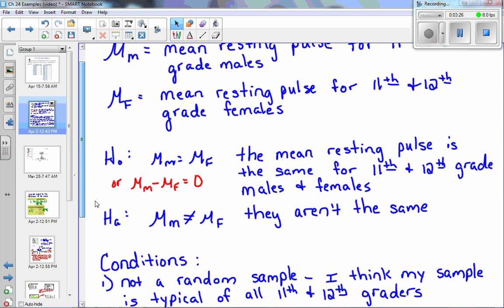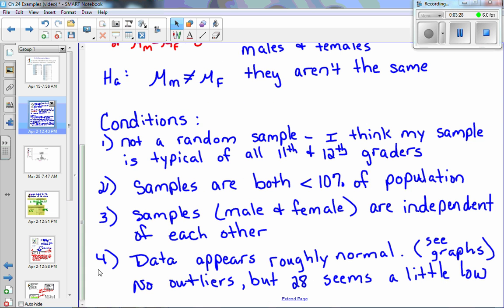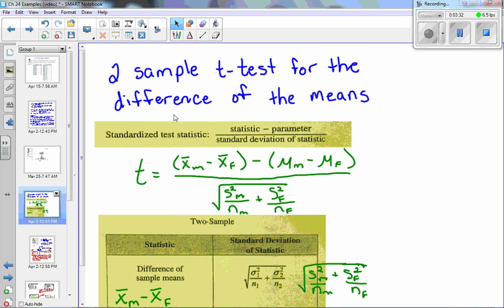So because the conditions are met, we can go ahead and do a test. The test we're going to do is a two-sample t-test for the difference of the means. Now remember, the reason why we have to use a t-test is because we don't know the population standard deviation. So because we are using the sample standard deviation, then we have to use a t-test.